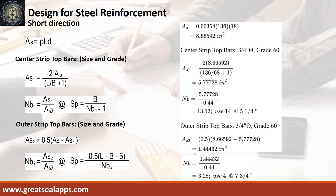Continuing at short direction, given rho equals 0.00354, L equals 136 inches, and D equals 18 inches, the area of steel for short direction bars is 8.66592 square inches. The area of steel at center strip is 5.77728 square inches, and the number of bars for 3/4 inch diameter is 14. The area of steel at outer strip is 1.44432 square inches, with 4 bars of 3/4 inch diameter on each side.